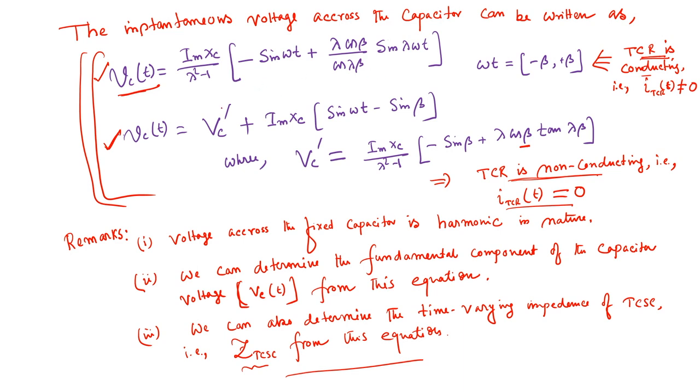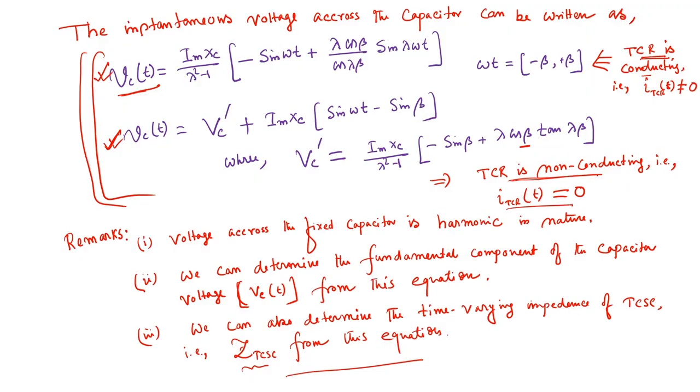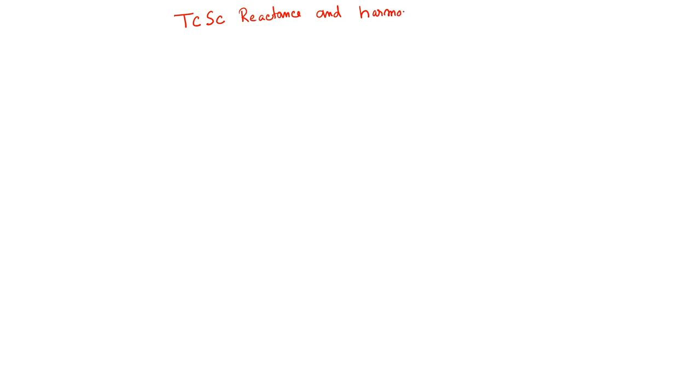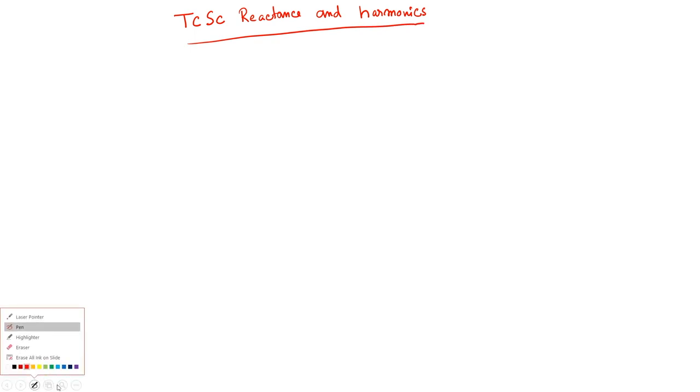Looking at both equations — one when TCR is conducting and one when TCR is non-conducting — you can see that these are not ideally sinusoidal. This would be some kind of distorted sinusoid, so some amount of harmonics would be present. In this particular lecture I will discuss TCR reactance and harmonics.